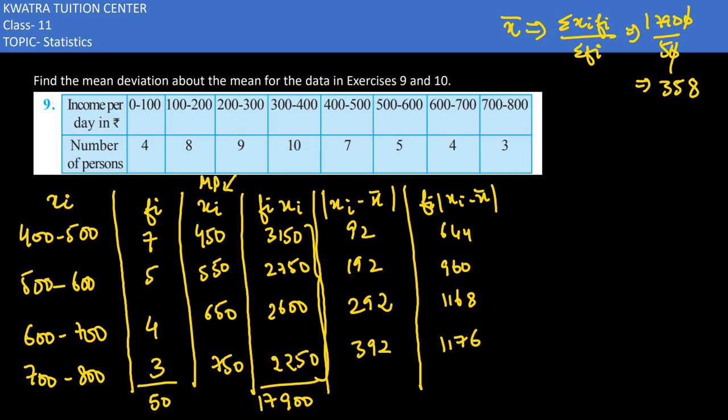Now adding all the f×|x - x̄|, you will get 7896. And then you would be finding the mean deviation.